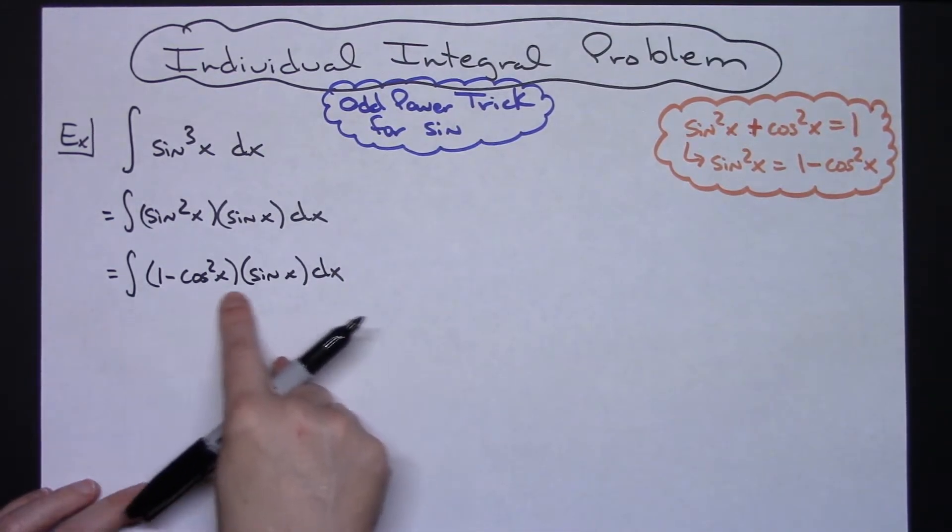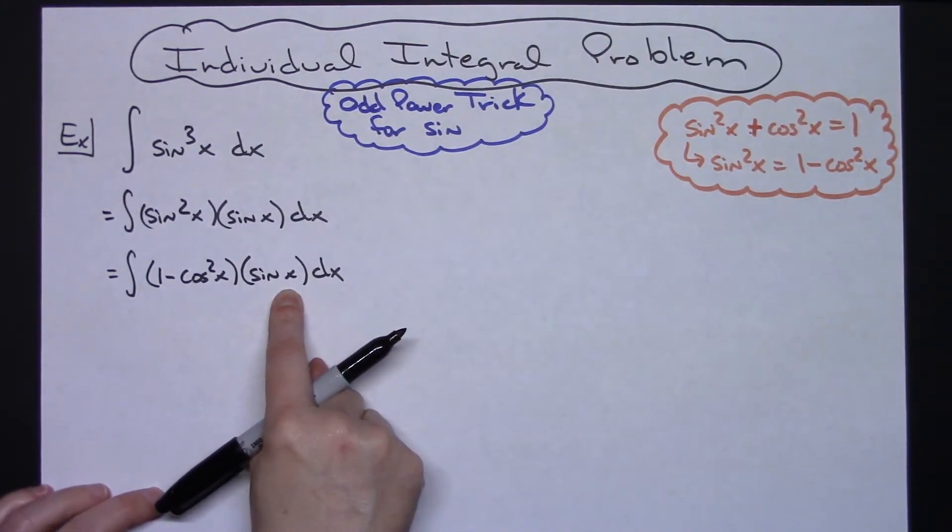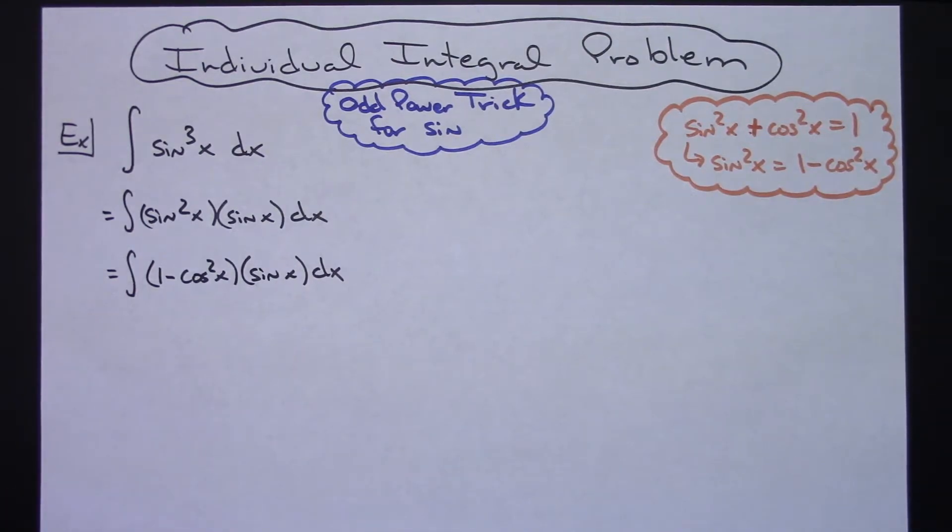At this point, I'm going to do a u substitution. So for my u substitution, I'm going to let my u equal cosine x.